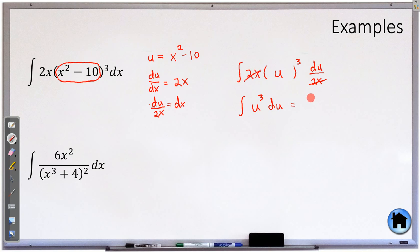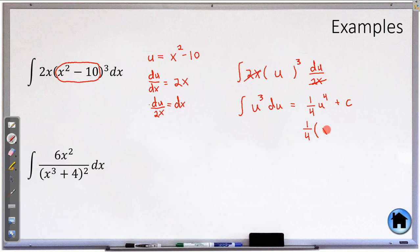The integral of u cubed is a very easy integral — the 3 doesn't multiply down, it becomes one-fourth u to the fourth plus c. And like always, we don't care about u, so we plug the x's back in: one-fourth times x squared minus 10 to the fourth, plus c. There is our anti-derivative.